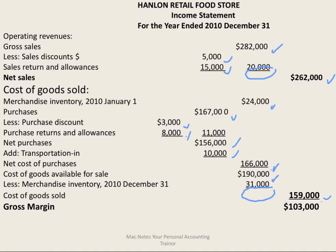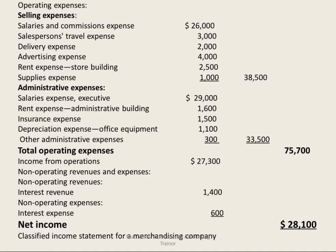We subtract the cost of the items sold from the selling price to get what's called gross margin. From the gross margin we then subtract operating expenses, which fall into two categories: selling and administrative.